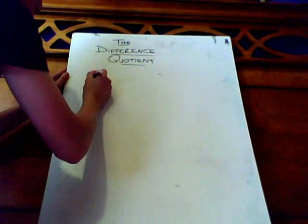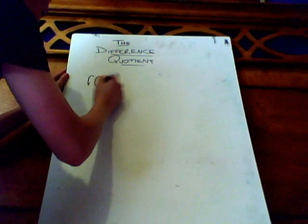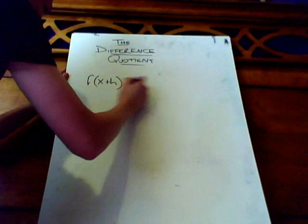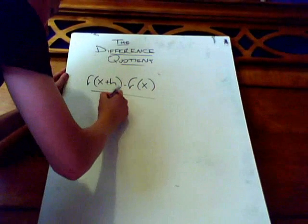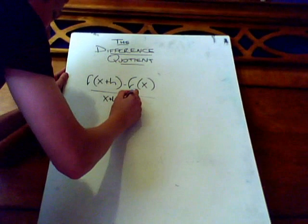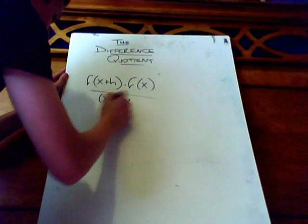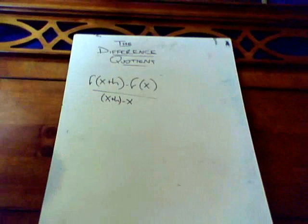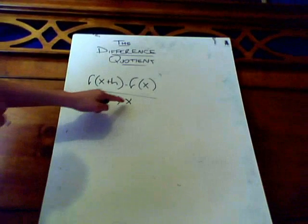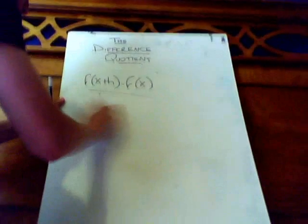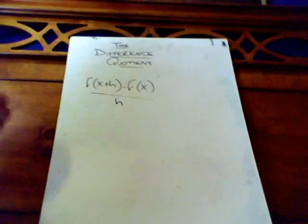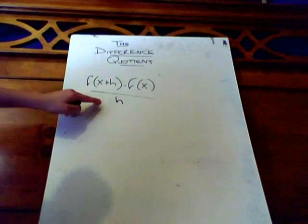So let's rewrite this. So we have f of x plus h minus f of x over x plus h minus x. Okay? The denominator x and minus x, that's going to simply cancel out, so we'll just have h. All right? That's going to be the slope between two points.